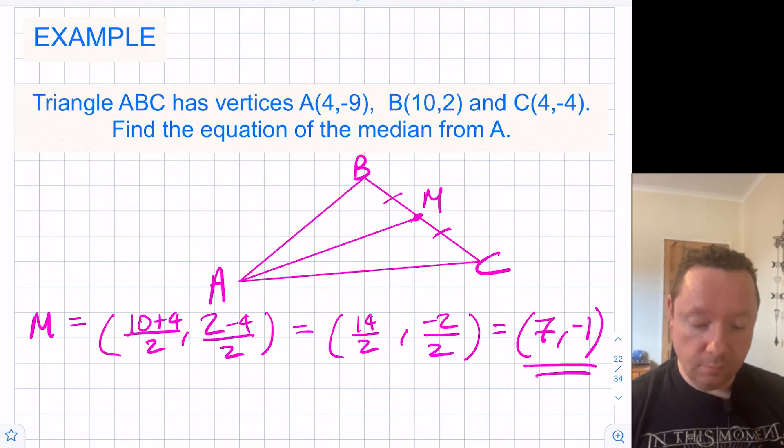We now need, we've got a point, we've already had point A anyway but we need the gradient. We've got two points to find the gradient between A and M.